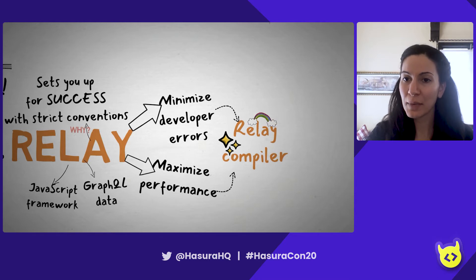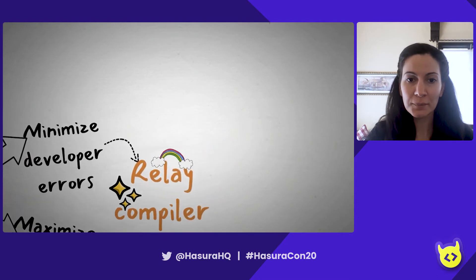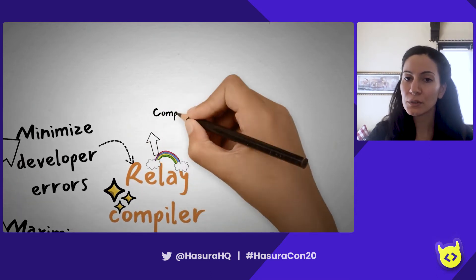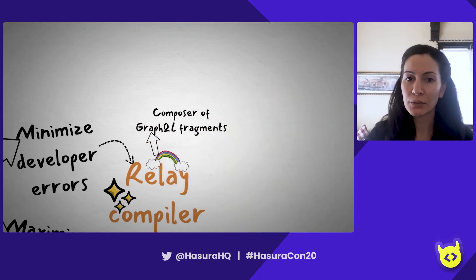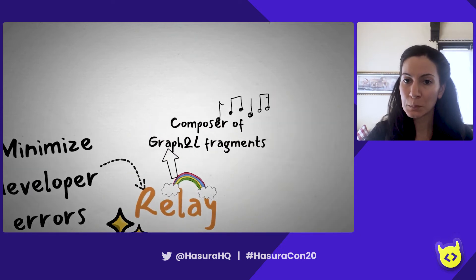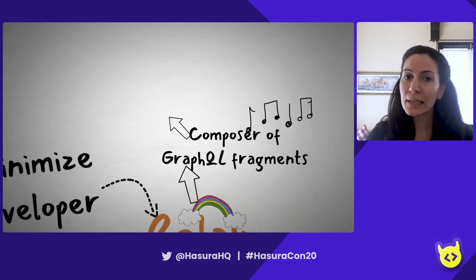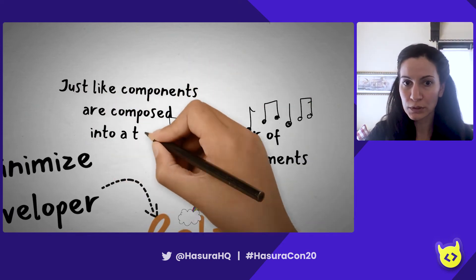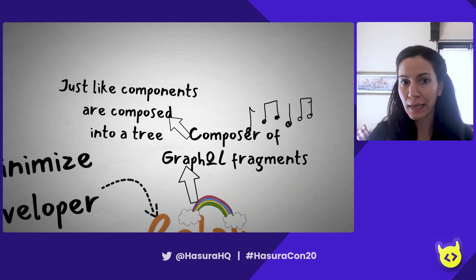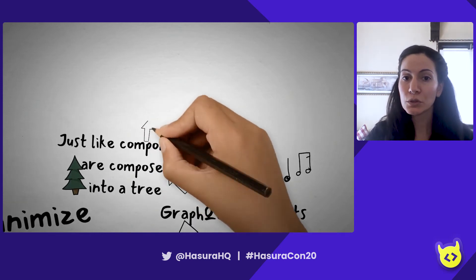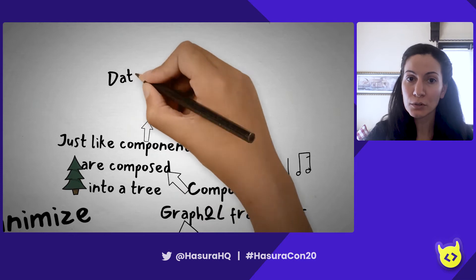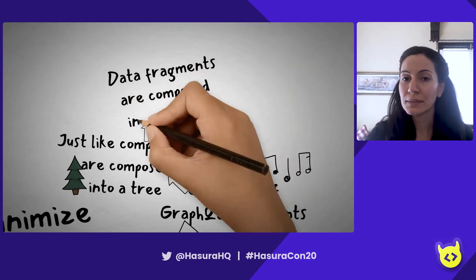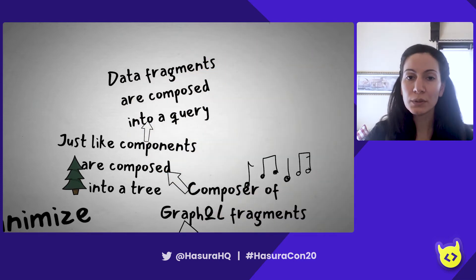And it's really quite magical, actually. It's a composer of sorts — it composes GraphQL fragments. What does this mean? Well, just like components are composed into a tree in React — Relay was also made by Facebook, so it's a similar mental model — in Relay, data fragments are composed into a query.